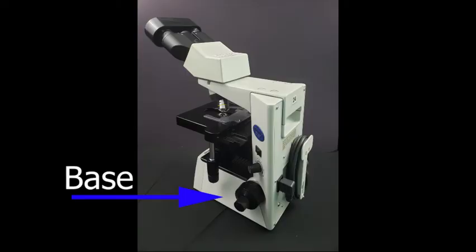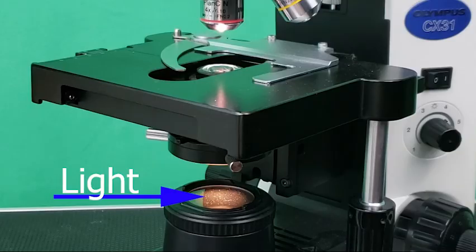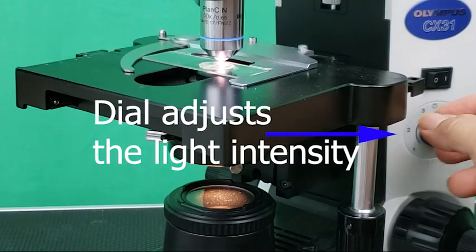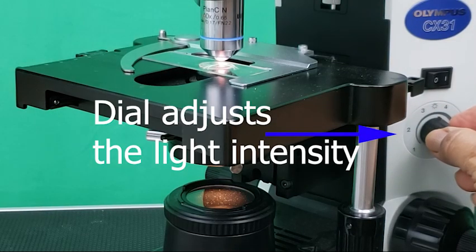Base: The bottom support of the microscope. The base includes the following: light and power switch. A light is a source within the base that illuminates the specimen. Light comes from below and passes through the slide. It could be electric or it could be reflected in older microscopes. Power switch: A switch either at the side or the front of the base turns the light on and off. A dial adjusts the light intensity.